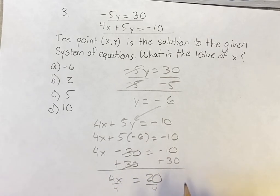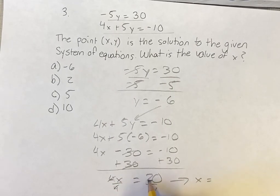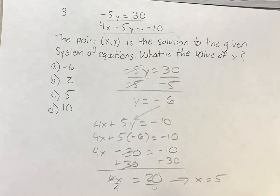Divide both sides by 4, running out of space, so write it over here, x is equal to 20 divided by 4 is 5.